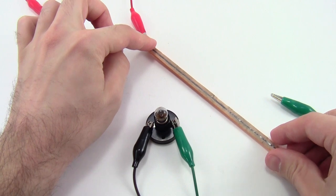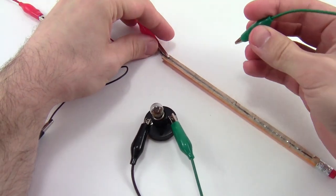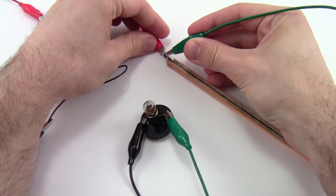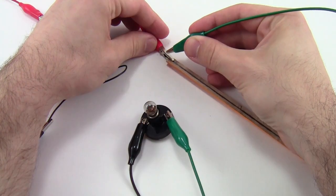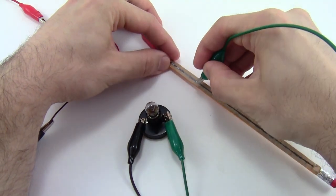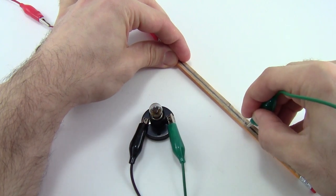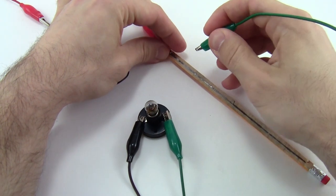So you can see here I've connected the red alligator clip to one end of the pencil. I can make sure my circuit is working by taking the green alligator clip and connecting it directly to the red alligator clip, and then I can press the green alligator clip down at various points along the length of the graphite to use it as a slider or a dimmer switch to control the brightness of the bulb.